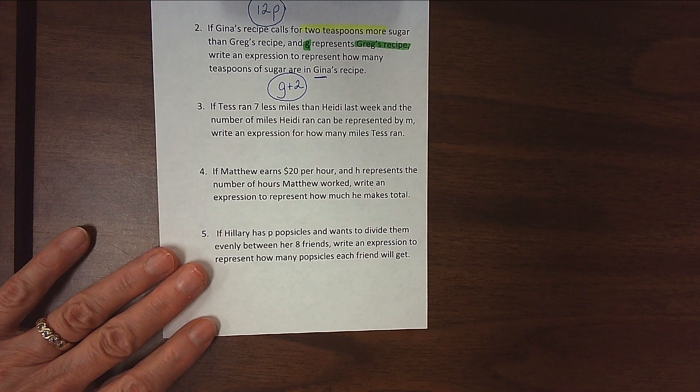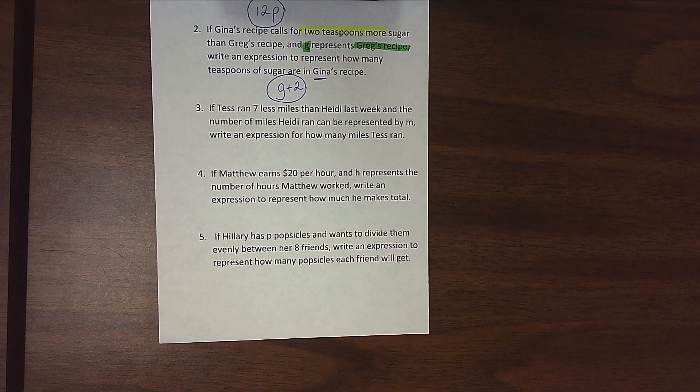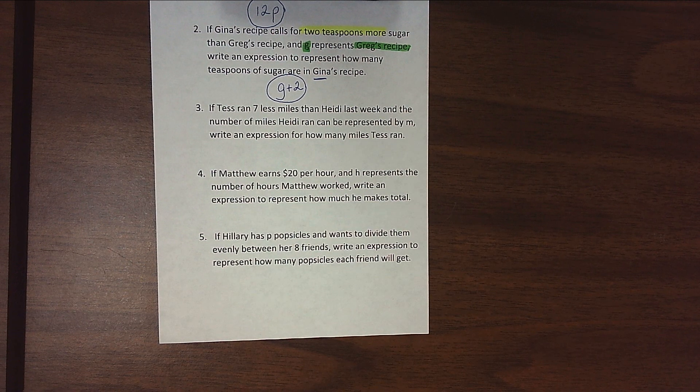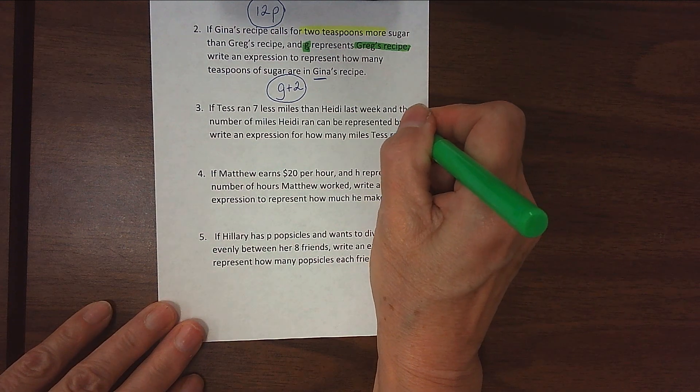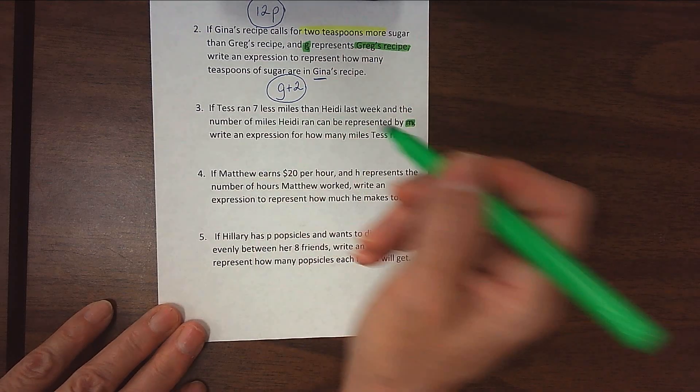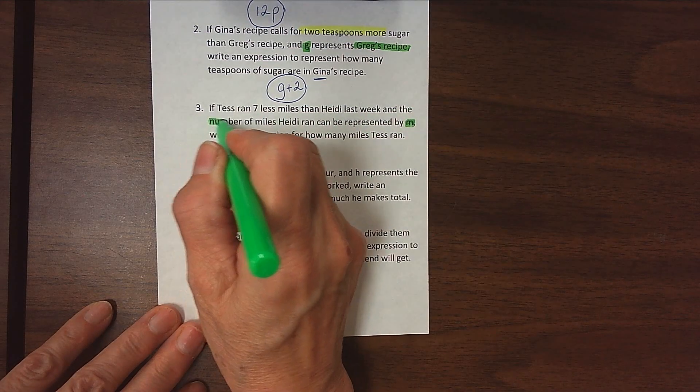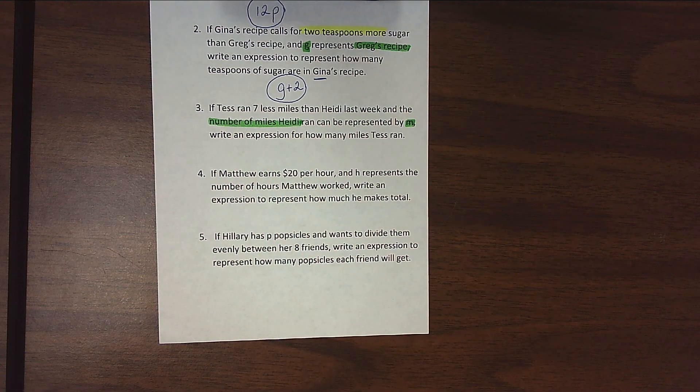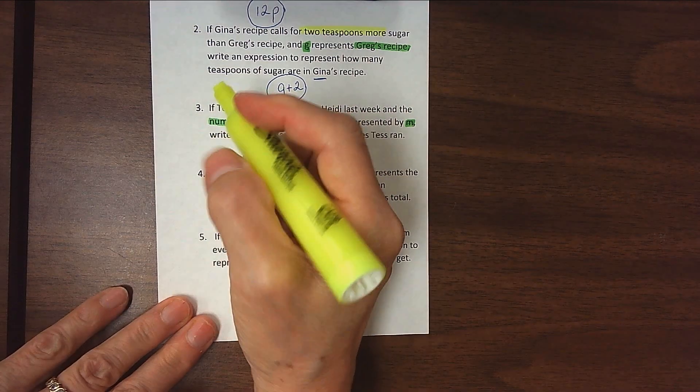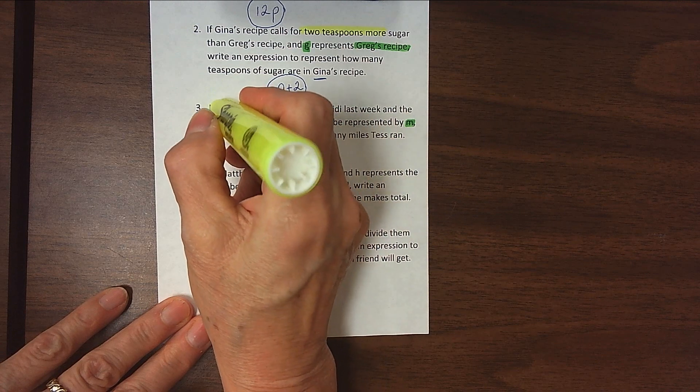All right, let's look at number three. If Tess ran seven miles less than Heidi last week, and the number of miles Heidi ran can be represented by M, write an expression for how many miles Tess ran. So M here, our variable, tells us the number of miles that Heidi ran.